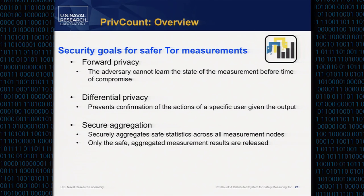Some security goals for PrivCount. First is forward privacy: an adversary who compromises one of the measurement nodes does not learn the state of the measurement before the time of compromise — they can learn what's happening after, but not before. Second, we provide differential privacy, which prevents confirmation of actions of a specific user given the output of the measurement process. Third, secure aggregation: we can securely aggregate statistics across all measurement nodes, and the only thing learned is the total final aggregated output. We'll revisit these three properties after I describe how the system works.